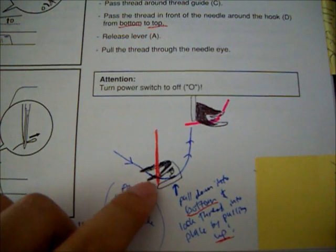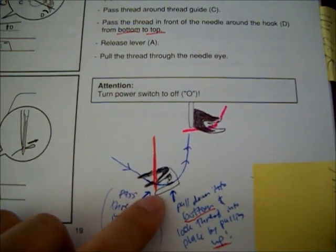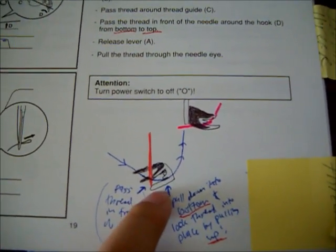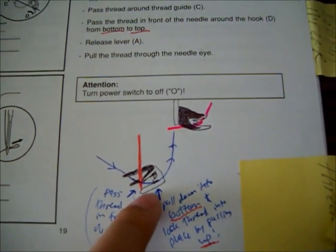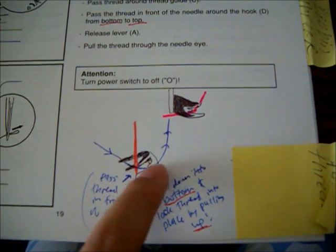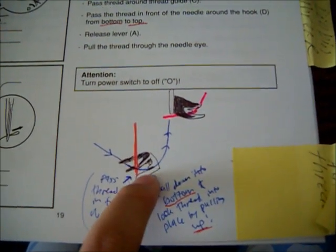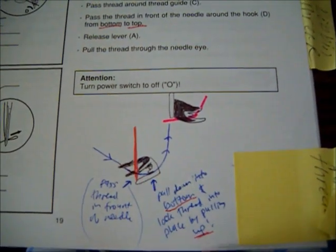First you have to pass it through in front of the needle, and then pull it down a little bit to the bottom of the hook, and then secure it by pulling upward, still keeping the thread at the bottom of the hook.